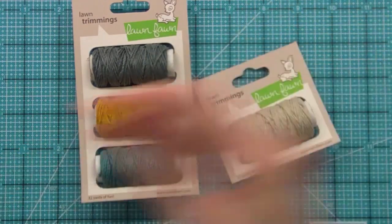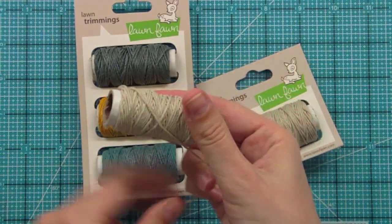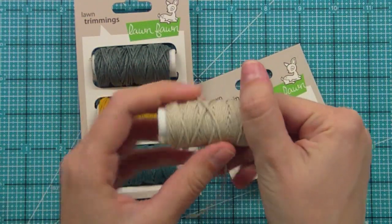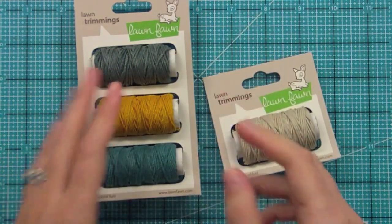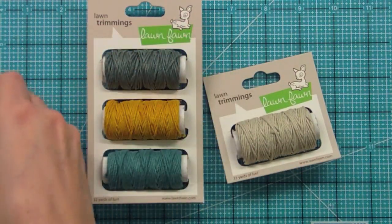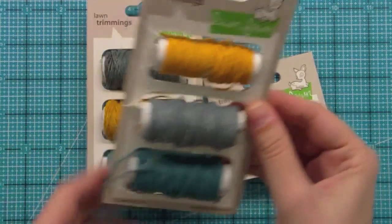You could of course pop the spools off and have them just like this. So you could put them in your drawer or however you store your twines and cords and strings. And you can also, if you didn't have a clip it up, you could store it on the packaging too, which is what I really like to do.